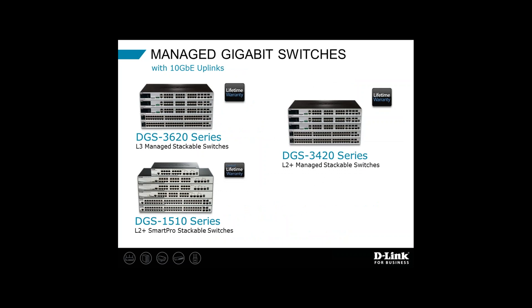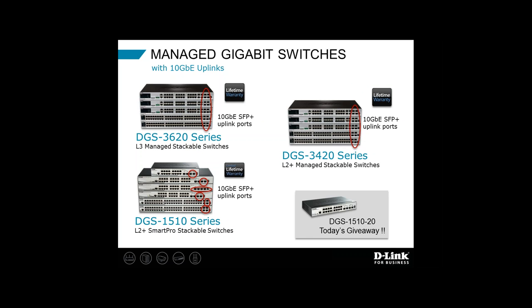We also have many families of gigabit switches — workgroup-type switches that all have 10 gig stacking or uplink ports. These gigabit switches, typically 24 and 48 port, are all going to have either two or four 10 gig ports for uplink into the distribution layer or for stacking. I'll remind you that today's giveaway is the DGS-1510-20 — a 16-port gigabit smart pro switch with two gigabit SFP and two 10 gigabit SFP+ ports. Stay tuned for that giveaway coming shortly.